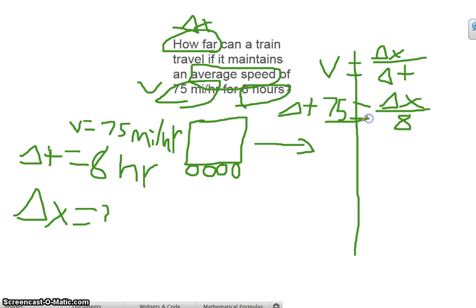Then we cross multiply. Delta T is 8, multiply it's going to be delta X equals, now 5 times 8 you see it's 40, 7 times 8 is 56 I think so it's going to be 600.